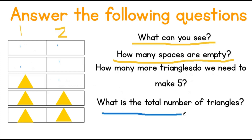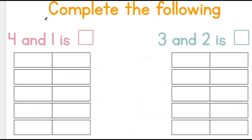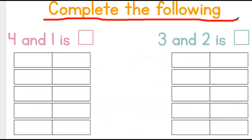What is the total number of triangles in this table? Let's count: one, two, three, four, five. There are five triangles in this table. Let's practice what we've just learned. One, two, three, four, five. Complete the following.